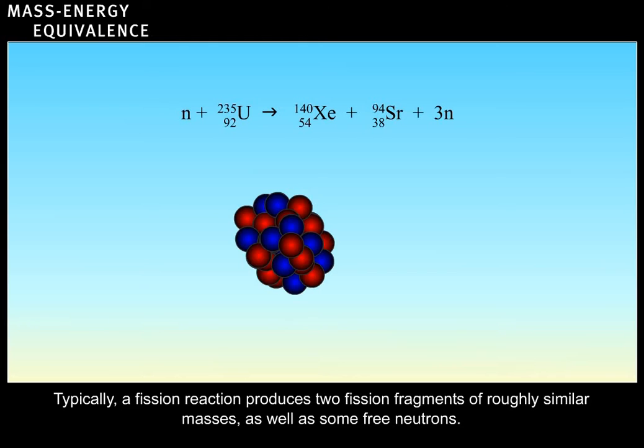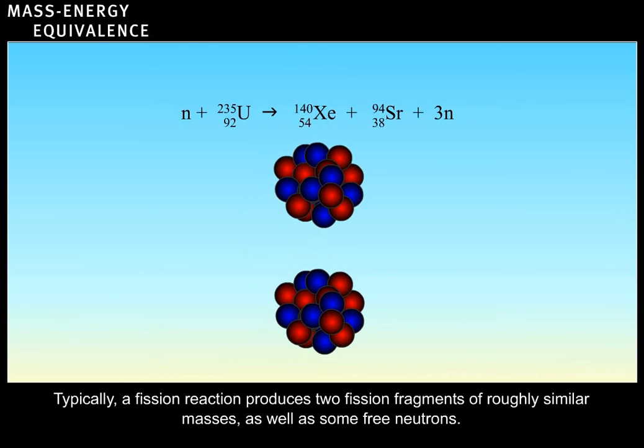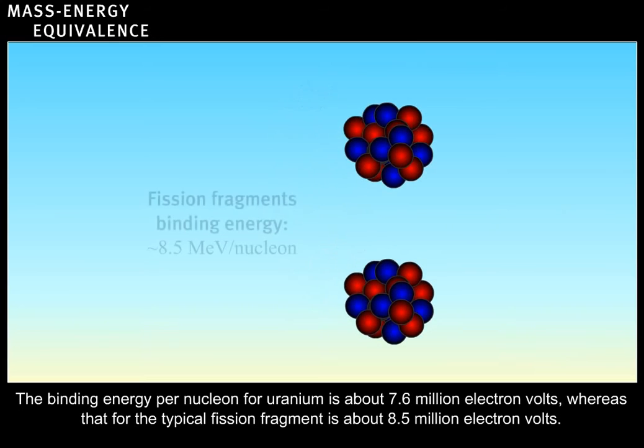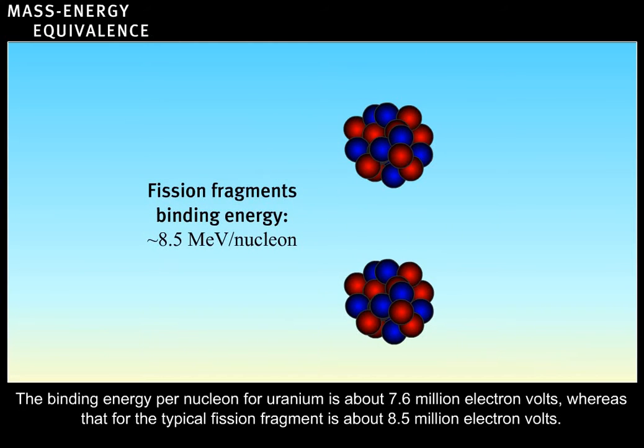Typically, a fission reaction produces two fission fragments of roughly similar masses, as well as some free neutrons. The binding energy per nucleon for uranium is about 7.6 million electron volts, whereas that for the typical fission fragment is about 8.5 million electron volts.